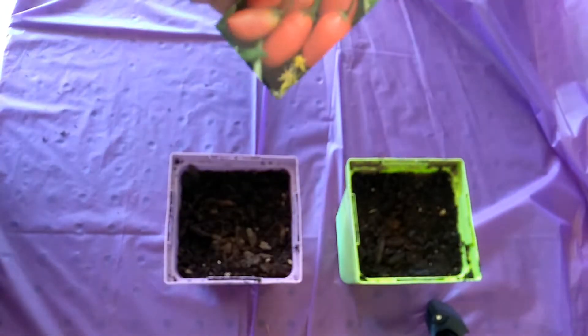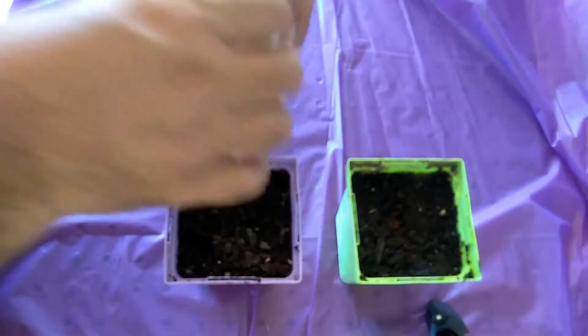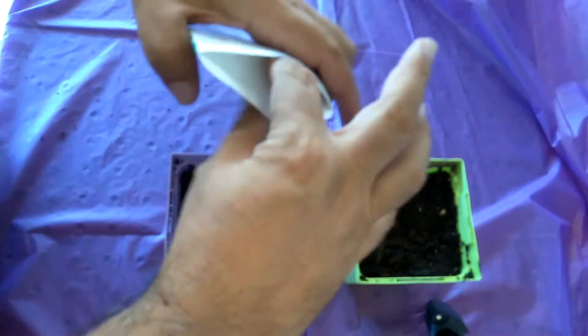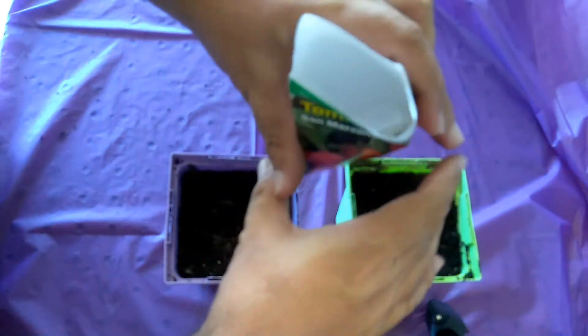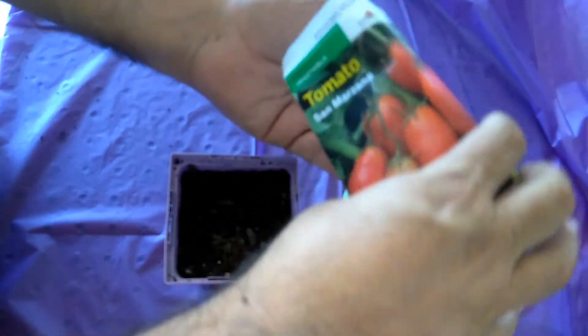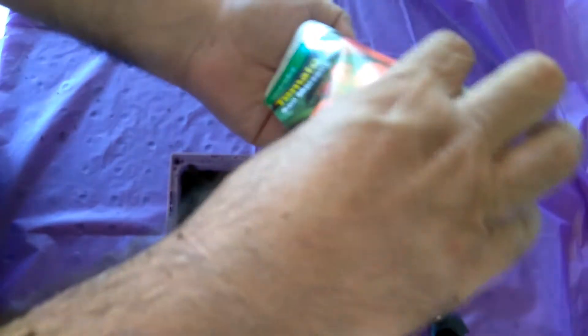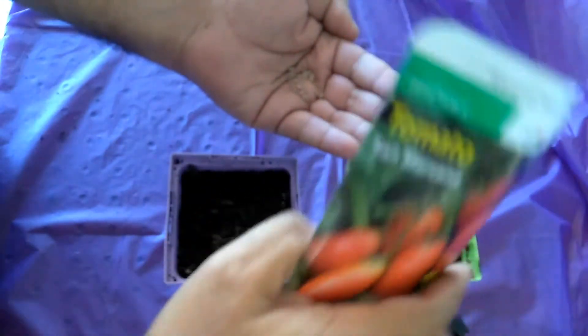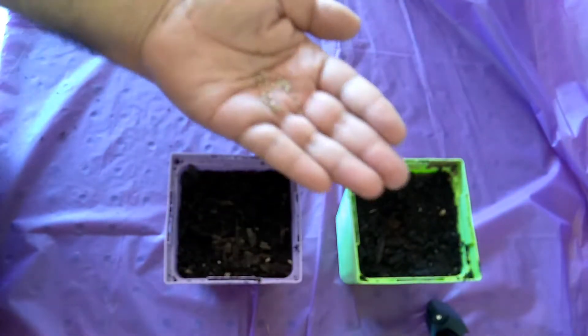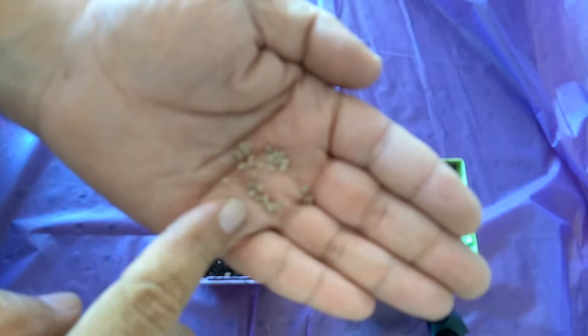This is the way I do it. I just grab my packet and pour some seeds in my hand. Actually it's not that many so I'm gonna pour all of them in here. As you can see they're very tiny little seeds.